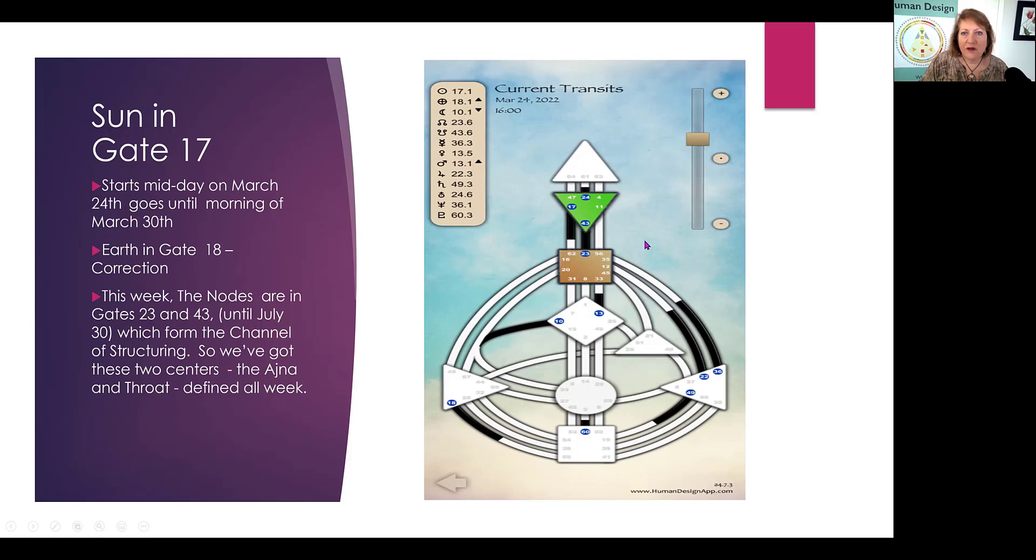Today, March 24th, the Sun moved into Gate 17 from Gate 25, and now we've got the 17 coming off the Ajna, right here on the left side of the Ajna. And then we've got the Earth in Gate 18, and that's coming off the bottom of the spleen down here. It's one of the fear gates, but a little less fearful than some of the others. It is called the Gate of Correction, and the fears are the fear or the disdain for authority.